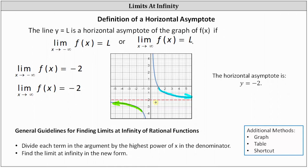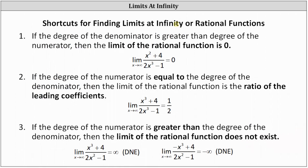When determining limits at infinity of rational functions, the general guideline is to divide each term by the highest power of x in the denominator, then find the limit in the new form. However, we can also determine limits at infinity using a graph, a table, or a shortcut method. The shortcut method only works when we have a limit at infinity of a rational function — meaning the numerator and denominator are both polynomial functions — and it works by analyzing the degree of the numerator and denominator.